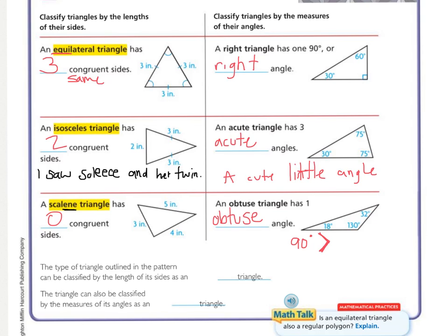Now that we have the different ways to classify a triangle, each triangle is going to have two names — one classification by side and one by angle. The type of triangle in the pattern had three congruent sides, so that is the equilateral triangle because they're equal. It also had three acute angles, and looking at our chart, that makes it an acute triangle.